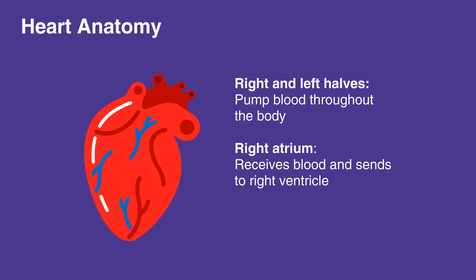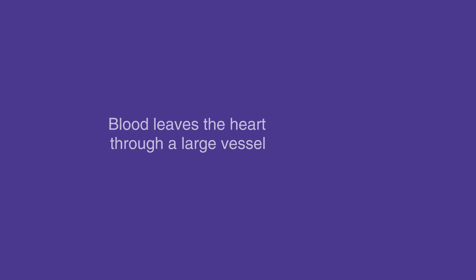The right atrium receives blood from the body and sends it to the right ventricle to be sent to the lungs for oxygenation. The left atrium receives the newly oxygenated blood and sends it to the left ventricle to be sent throughout the rest of the body. Valves between each chamber prevent reverse blood flow. Blood leaves the heart through a large vessel called the aorta.